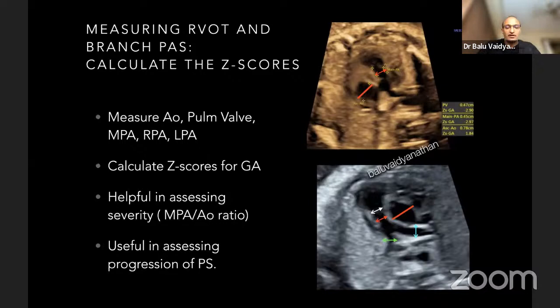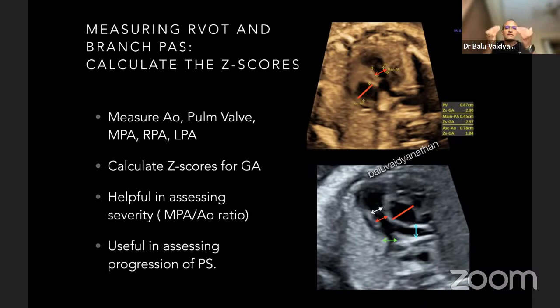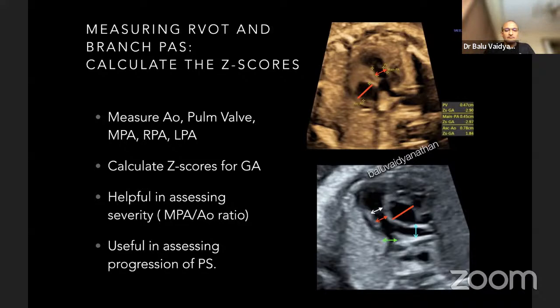I also calculate the Z-score of all these structures for the gestational age. When I follow up this patient, I serially measure the same measurements. If I find that the pulmonary artery is becoming smaller and smaller and the Z-scores are becoming more and more negative as gestation advances, I understand that the pulmonary stenosis is progressing in utero. Sometimes a mild form of stenosis in the beginning can end up as more severe stenosis at the end of the pregnancy, meaning the child may need an immediate neonatal intervention.